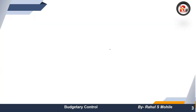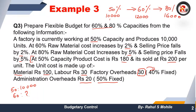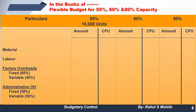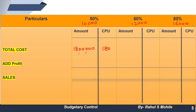Now reading the sales information for 50% capacity: selling price is 200 per unit. Writing 200 in the per unit column, multiplied by 10,000 units gives sales of 20 lakhs. Subtracting total cost 18 lakhs from sales 20 lakhs gives a difference of 2 lakhs — that is your profit. This is marked with a star as a balancing figure. The CPU for sales is 200.